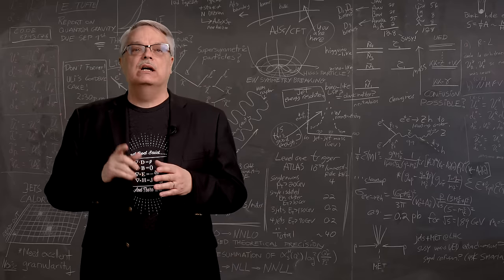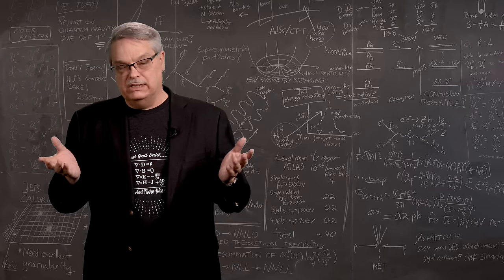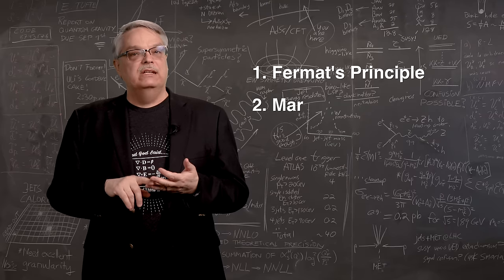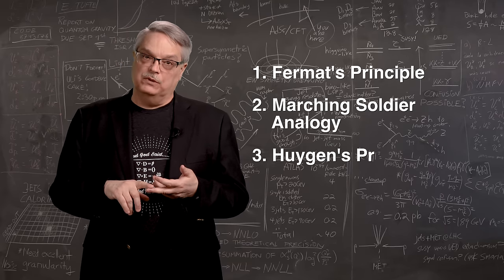There are three commonly suggested explanations that are wrong, or at least incomplete. They are Fermat's Principle, the analogy of soldiers marching, and Huygens' Principle.